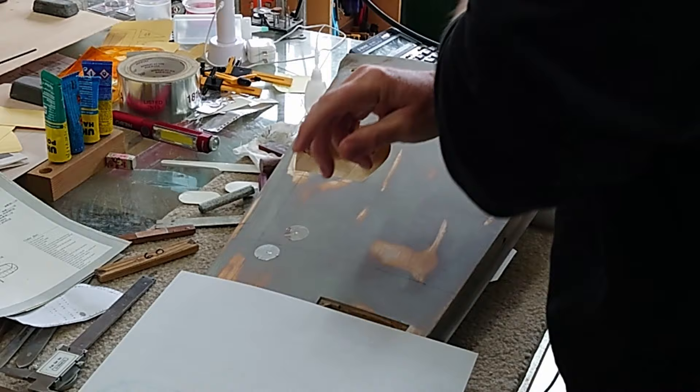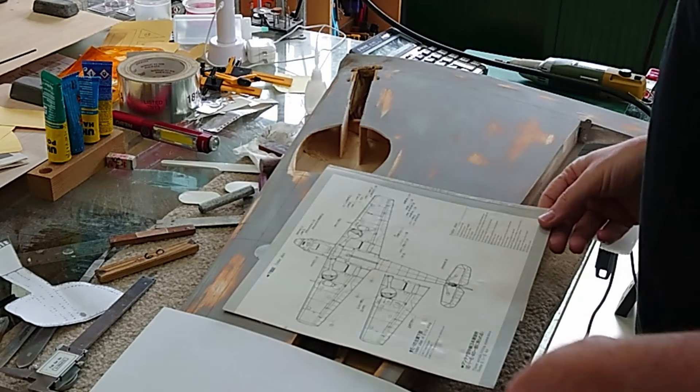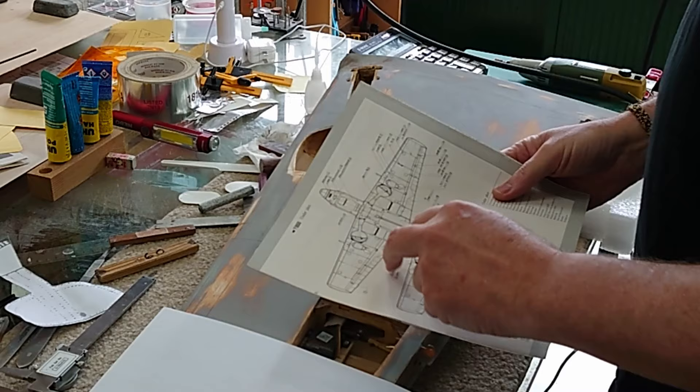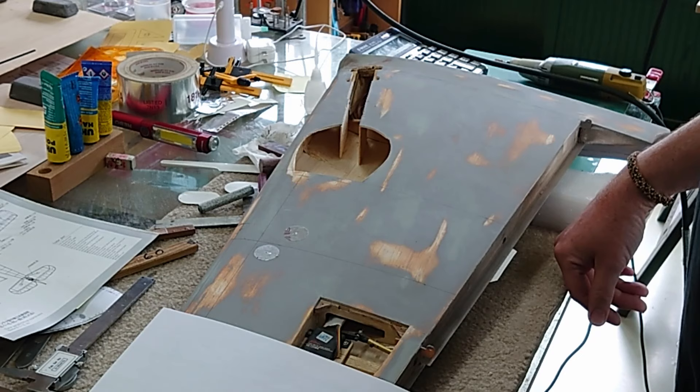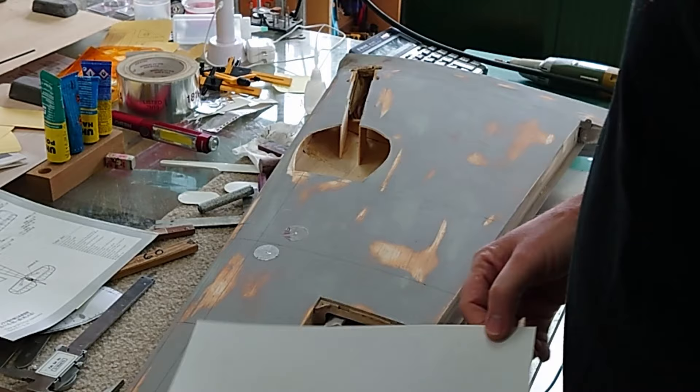The next thing I wanted to work on, which is a rather prominent feature of the underside, is the machine gun magazine blister. I intend to make these out of a thin fiberglass. I want them to be as light as possible.